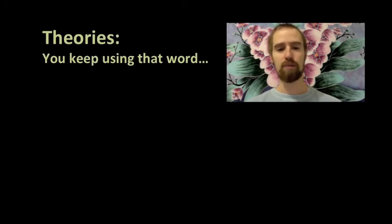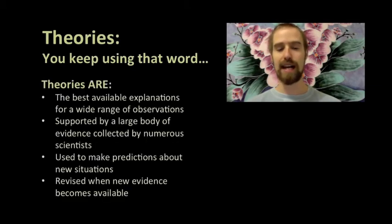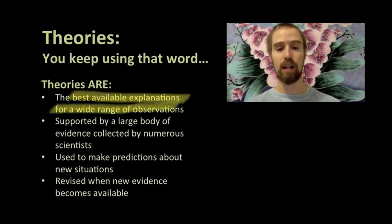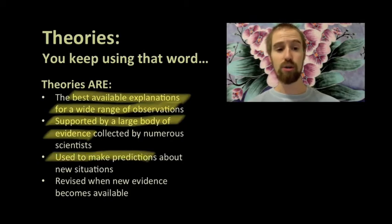This idea that we've been talking about, like plate tectonics and like gravity, is a scientific theory, and it's worth coming back to the idea of what exactly a scientific theory is before we go any further. Theories are powerful explanatory tools in science. They help us explain a wide variety of observable phenomena and are supported by a large body of evidence. Theories help us to make predictions about new situations, and when our predictions fail, we make revisions to our theory to account for new evidence whenever it becomes available.